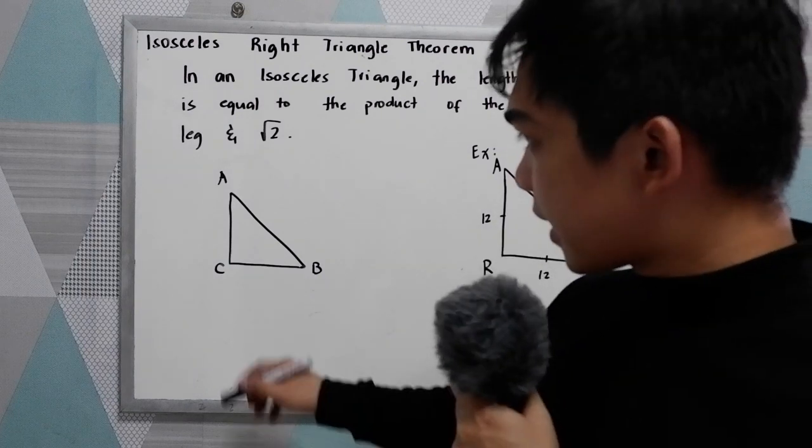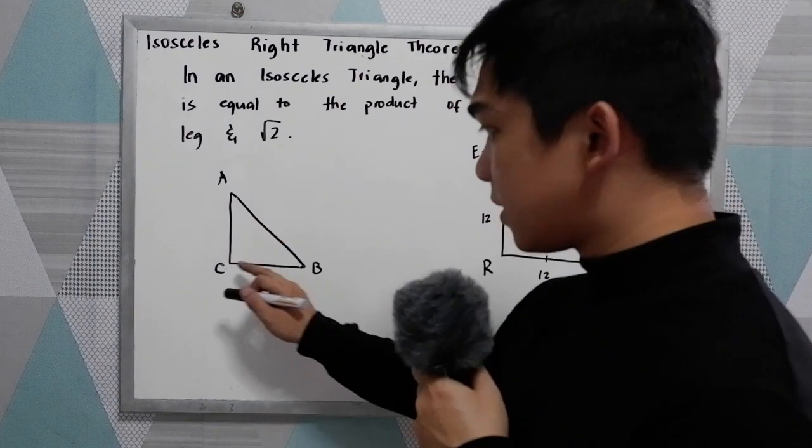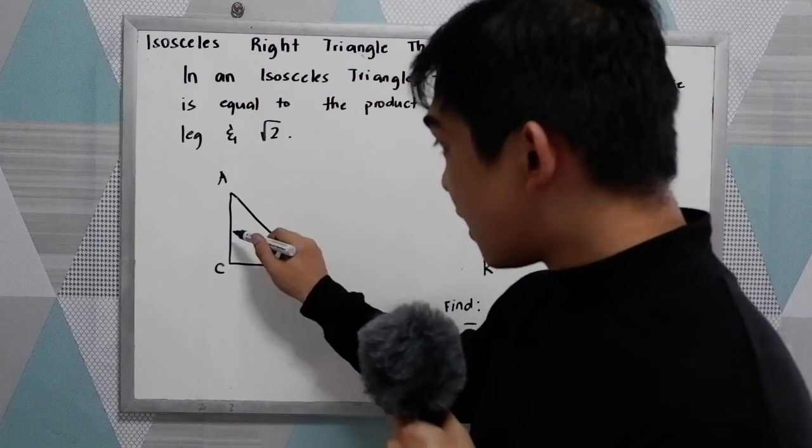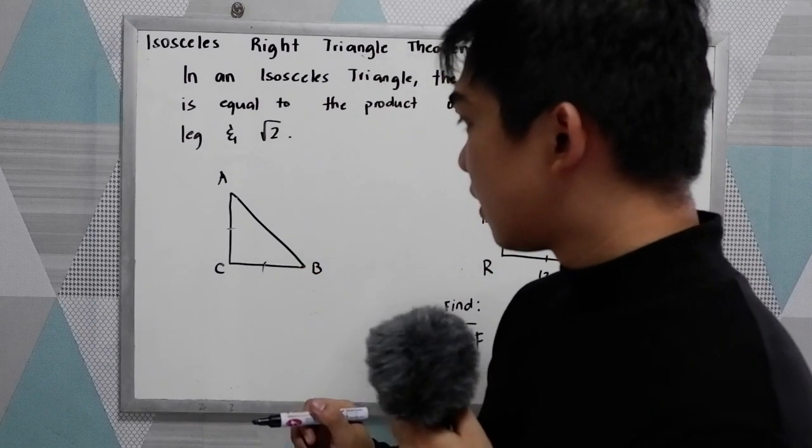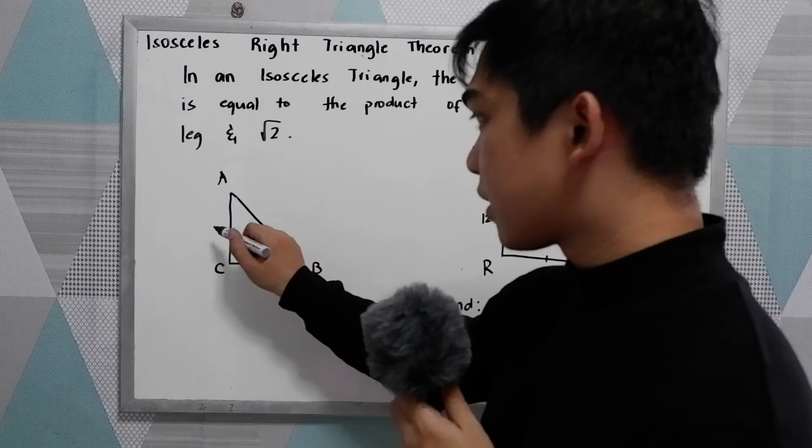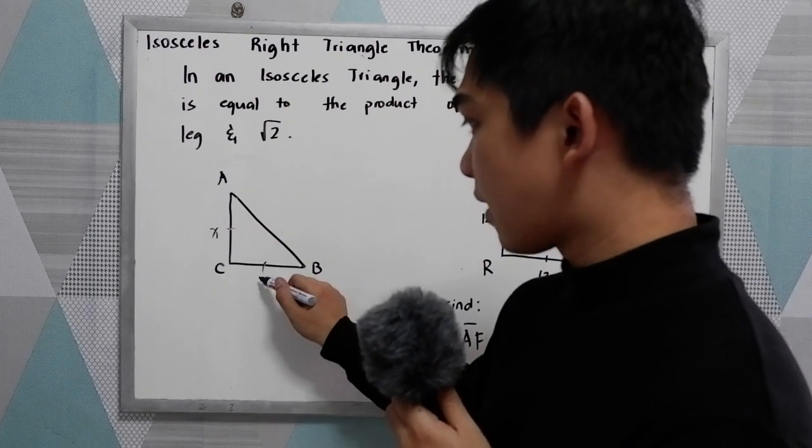Let's say we have triangle ABC. Our legs here measure X and X.